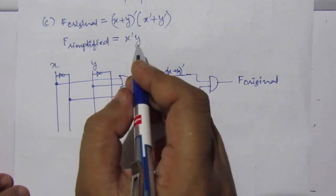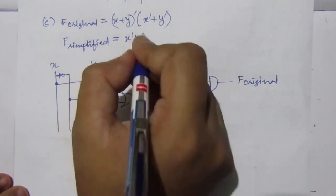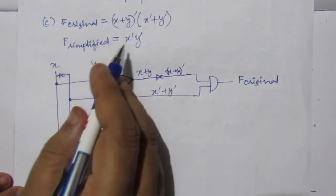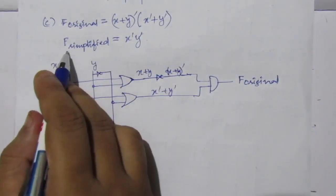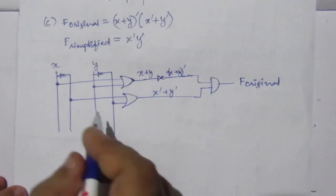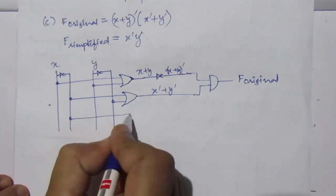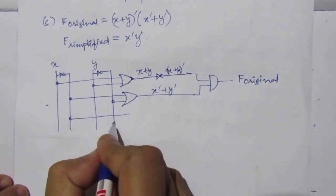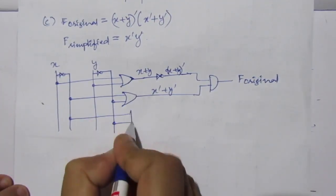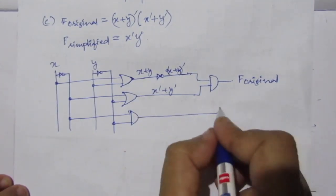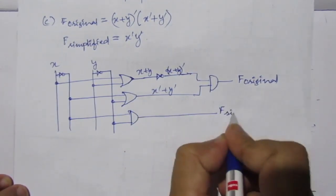For F simplified, which is X̅Ȳ, take the X̅ and Ȳ lines and use an AND gate — you get F simplified directly.